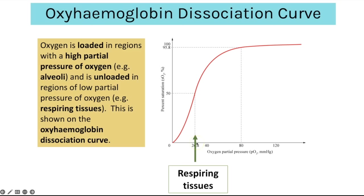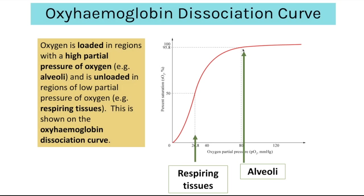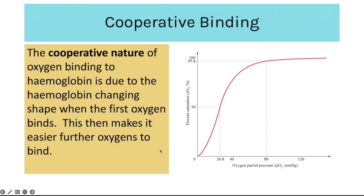At high partial pressures of oxygen the haemoglobin is at about 100% saturation — fully loaded with oxygen. At low partial pressures of oxygen there are much lower percentage saturations, indicating oxygen is being unloaded. This is typically seen in respiring tissues where oxygen is being used up. In the alveoli where there is a really high partial pressure, haemoglobin loads lots of oxygen to transport it around. This graph shows changes in affinity — at high partial pressures haemoglobin has a high affinity for oxygen; at low partial pressures it has a lower affinity.